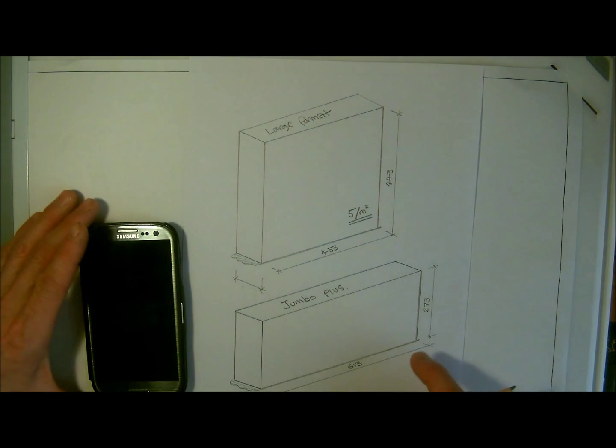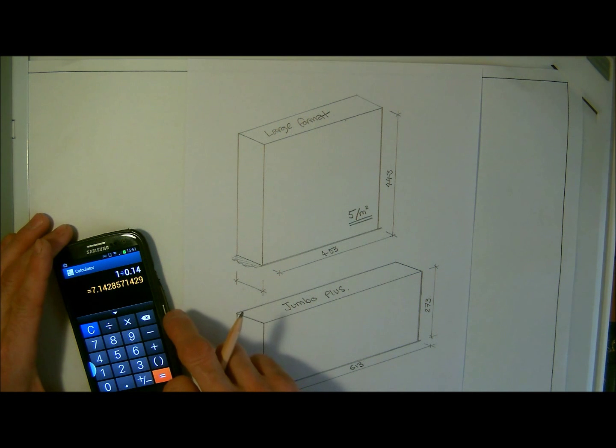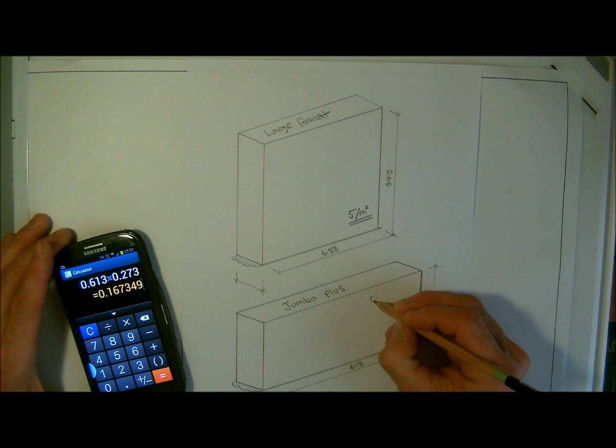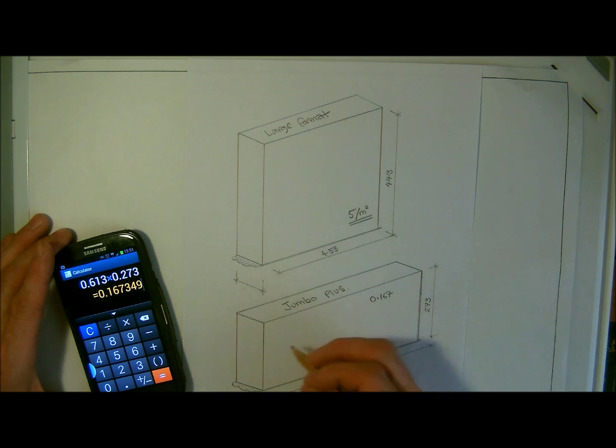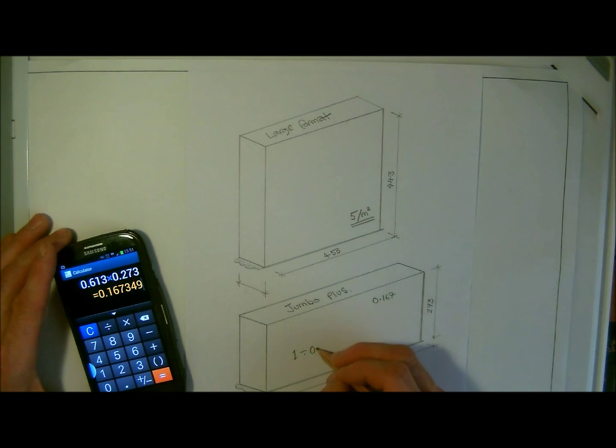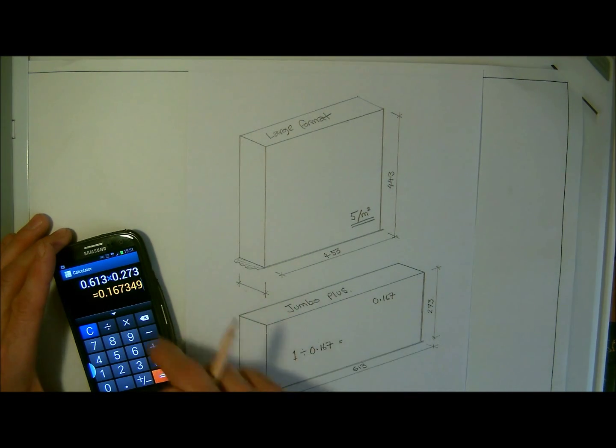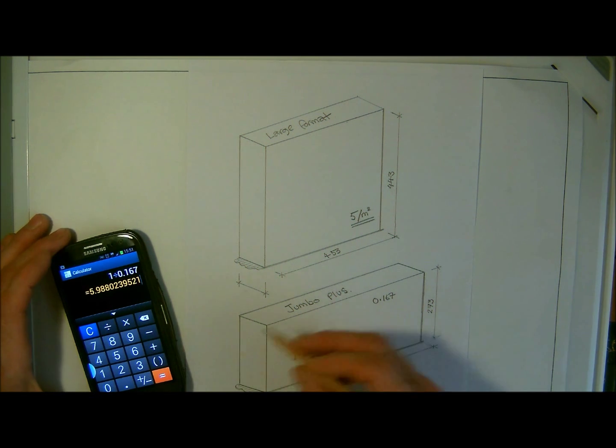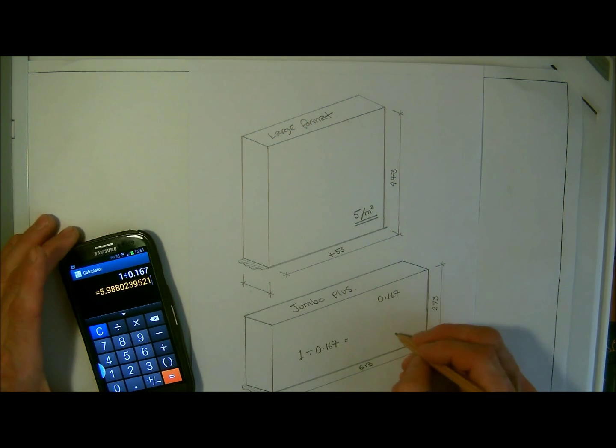So, Jumbo Plus, we just want to have a quick look at this one, so Jumbo Plus is going to be 0.613 multiplied by 0.273 equals. So, we have a figure there of 0.167, so 1 divided by 0.167 equals. 1 divided by 0.167 equals, we have 5.98, so that's going to be 6, 6 per metre squared.